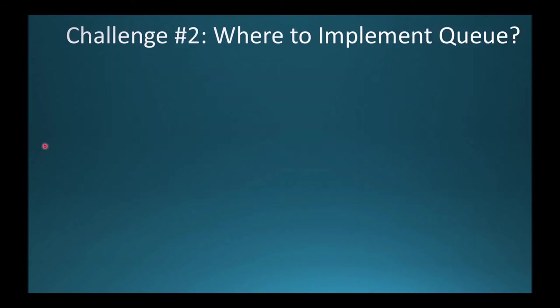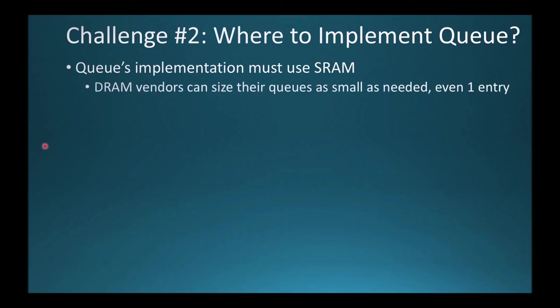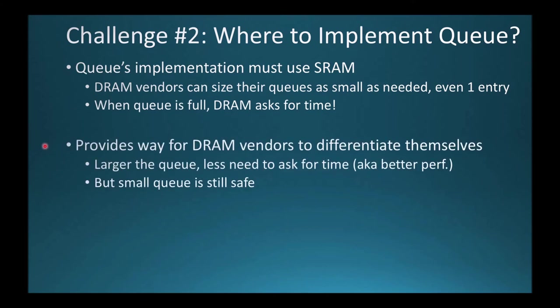Challenge number two: while the counters are all stored in DRAM, where are we going to store the queue? For the service queue, Panopticon does use SRAM. However, this queue is small. In our performance evaluation, we use a queue of eight entries per bank, but DRAM vendors can size their queues as small as needed — even to a single entry for the entire DRAM device, Panopticon will still work. When the queue is full, the DRAM stops and asks for time. A large queue size gives better performance because the larger the queue, the less need to ask for time. However, even with a small queue, Panopticon is still safe.